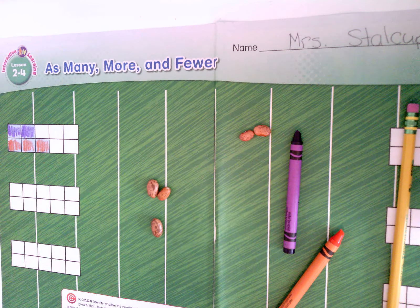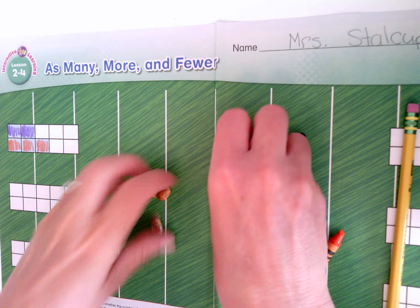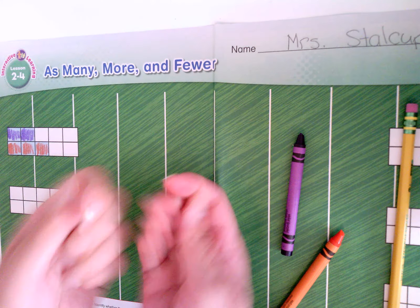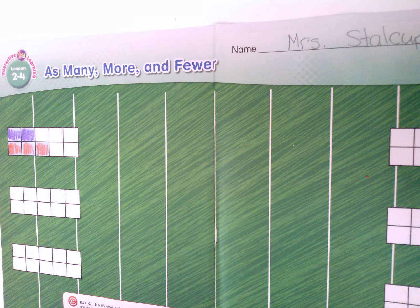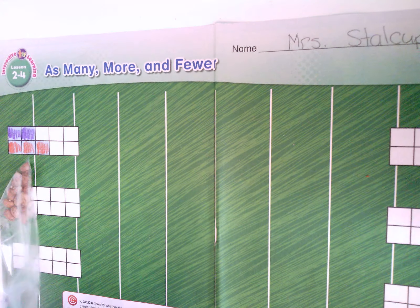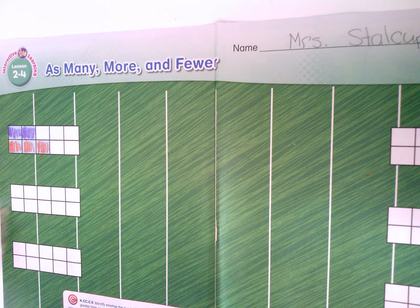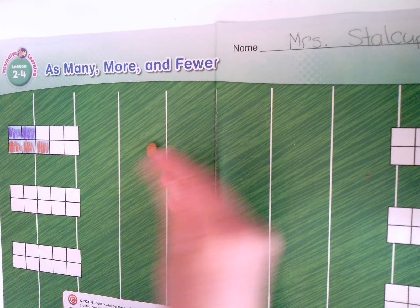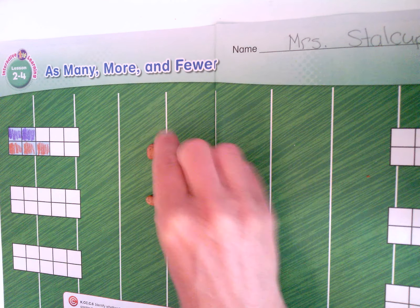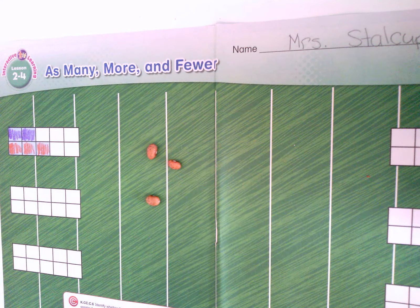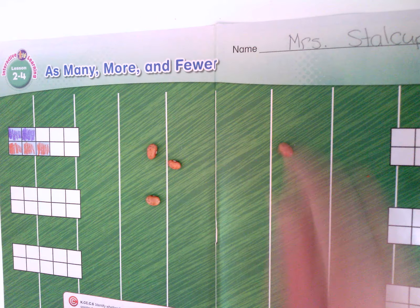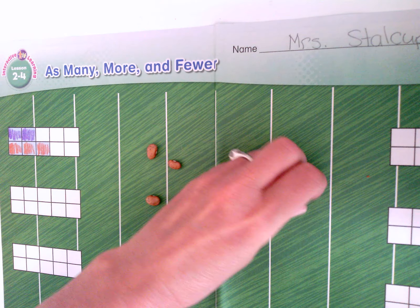Let's try a different number. Get your counters ready because you're going to build the teams too. On this team, put three players: one, two, three. And on this team, put four players: one, two, three, four.